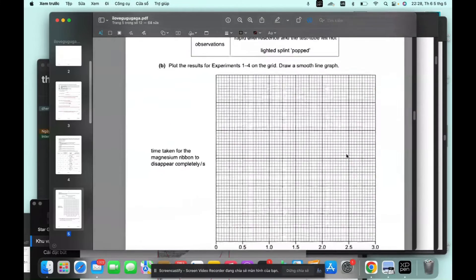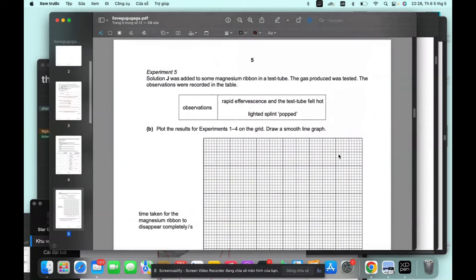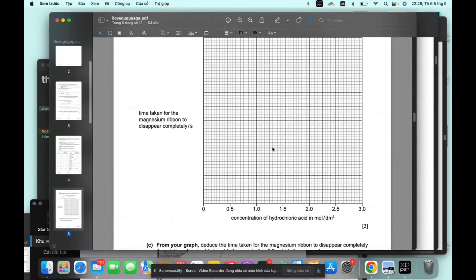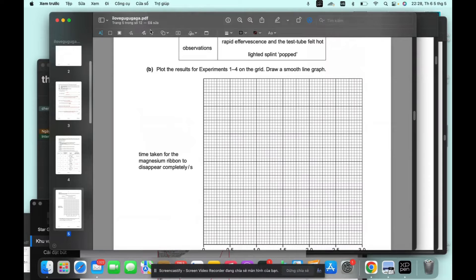So we plot the result the result in a smooth line graph. Okay. Put the result on the grid. Draw a smooth line graph. Time taken. So we use one of our graph making function.